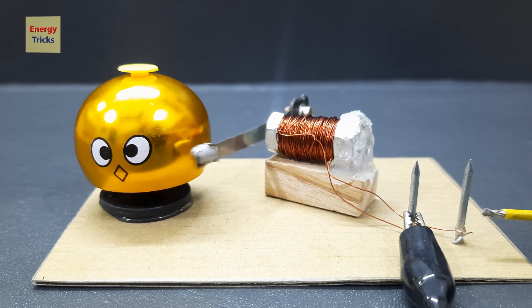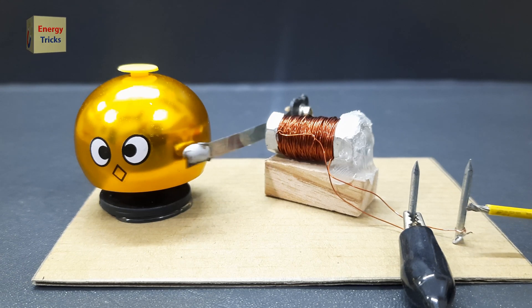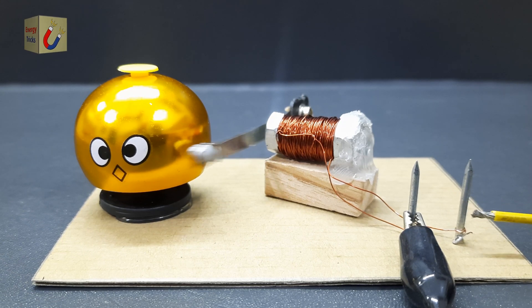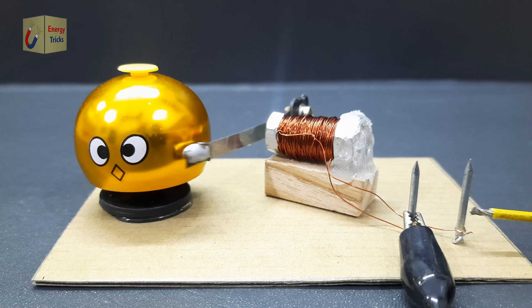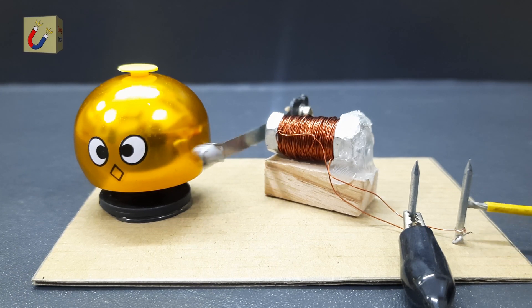The idea behind this project was to design a working bell system that could sound when activated by an electric current. The system consisted of a battery, an electromagnet, a steel striker, and a clapper that would strike the bell when the circuit was completed.